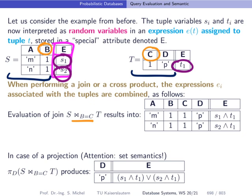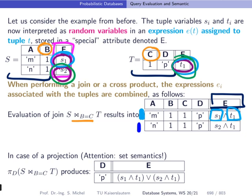What we do then is to update this E column, indicating that in order to have this tuple in the result, this tuple S1 has to be there, and the tuple T1 has to be there. So both have to be there. And in order to have M as a result, we have to have S1 and T1 in our probabilistic database being present.